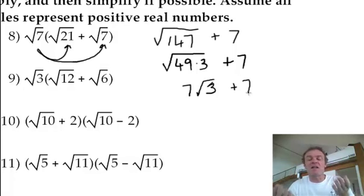Don't think you can go any more. That's it. You can't combine a root 3 with just the 7. You can't add the 7 and the 7. It's two different things. That's the answer.